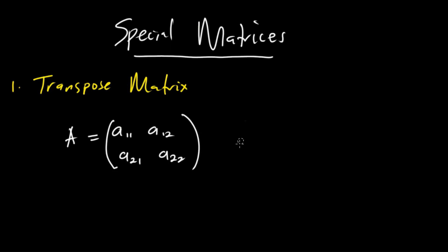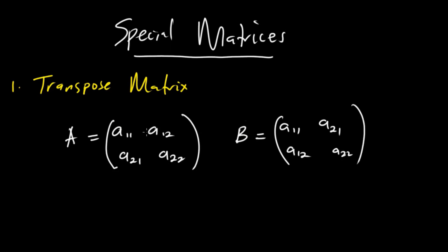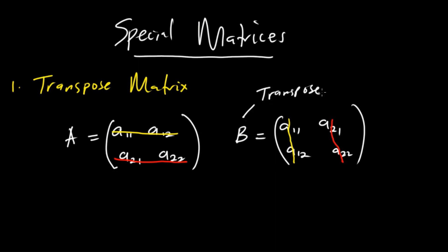If we interchange the rows and columns of matrix A to get matrix B, we are going to have A11, A12, A21, A22 rearranged so that all these elements become the new rows and columns. We have successfully interchanged the rows and columns of this matrix and referred to matrix B as the transpose of matrix A.